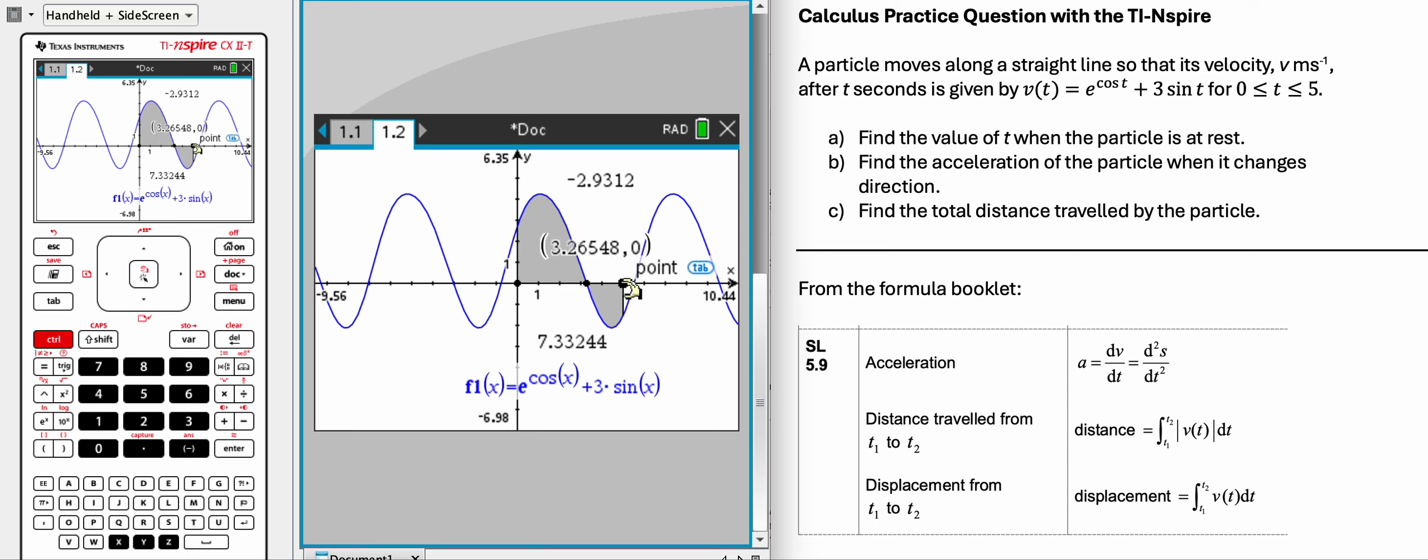So what it's doing is it's taking the above the x-axis as a positive value, below it as a negative. And when adding that together, it makes it smaller, which doesn't make sense for total distance, but it does for displacement.